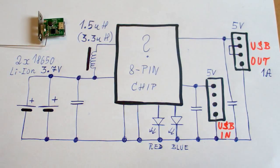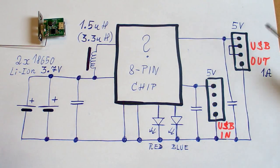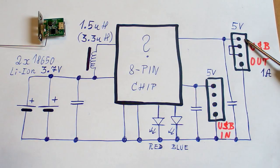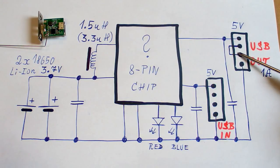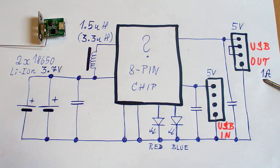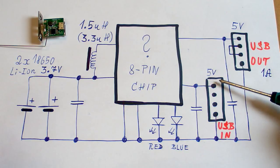So here's the schematic and there's almost nothing. This is the USB out connector with 5 volts and ground pins and the data pins are connected to indicate it's capable of 1 amp. This is the USB in connector.